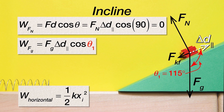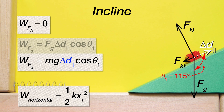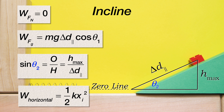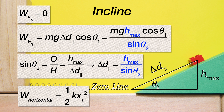Theta 1 is 90 plus 25, or 115 degrees. In a previous video I did a detailed explanation of that angle, so if you need a better understanding of why theta 1 is 115 degrees, click on the link that just popped up or the one in the description. The work done by the force of gravity equals mass times g times displacement parallel times the cosine of theta 1 (115 degrees). We need displacement parallel in terms of height maximum, so using the triangle: sine of theta 2 equals height maximum divided by displacement parallel, giving displacement parallel equals height maximum divided by sine of theta 2. Substituting back, the work due to gravity equals mass times g times height maximum times cosine of theta 1, all divided by sine of theta 2, where theta 2 is 25 degrees, the incline angle.